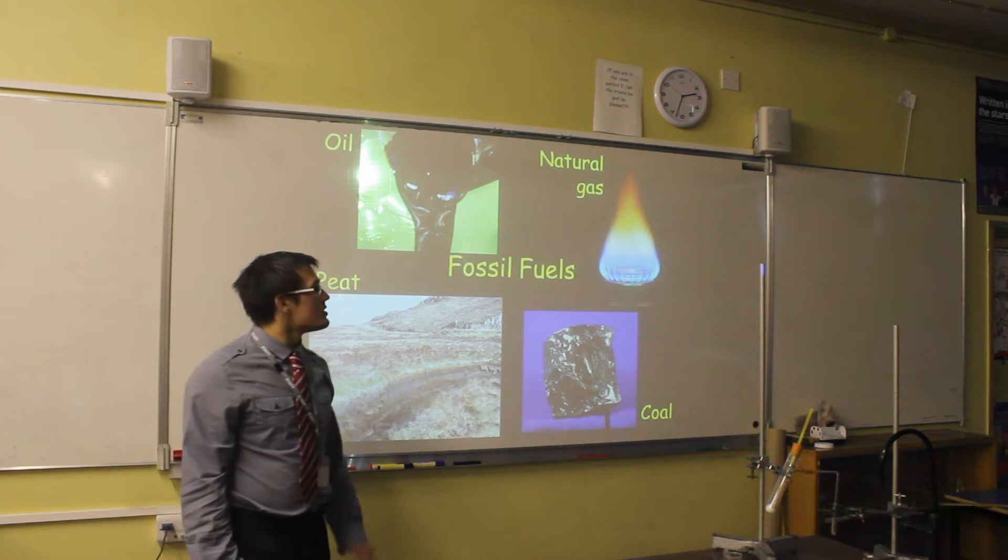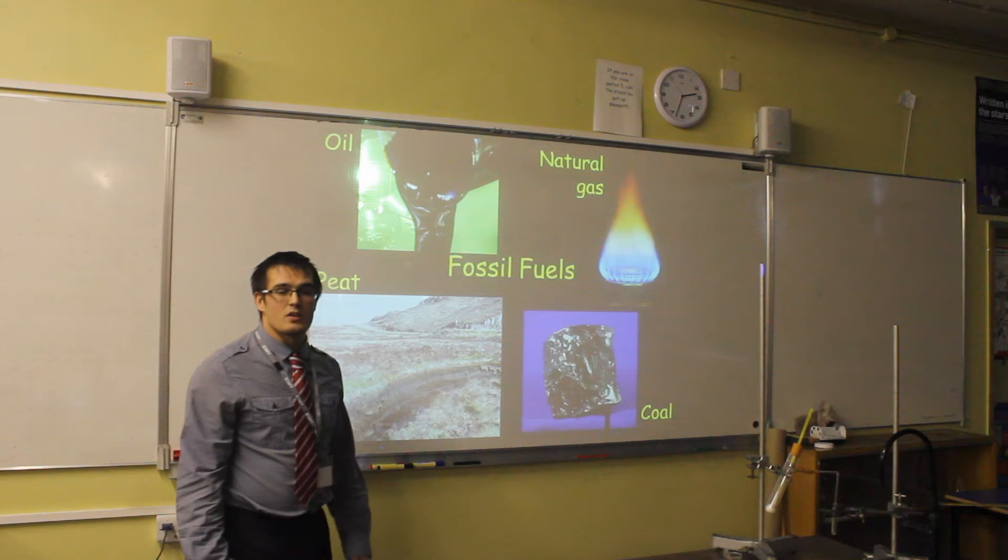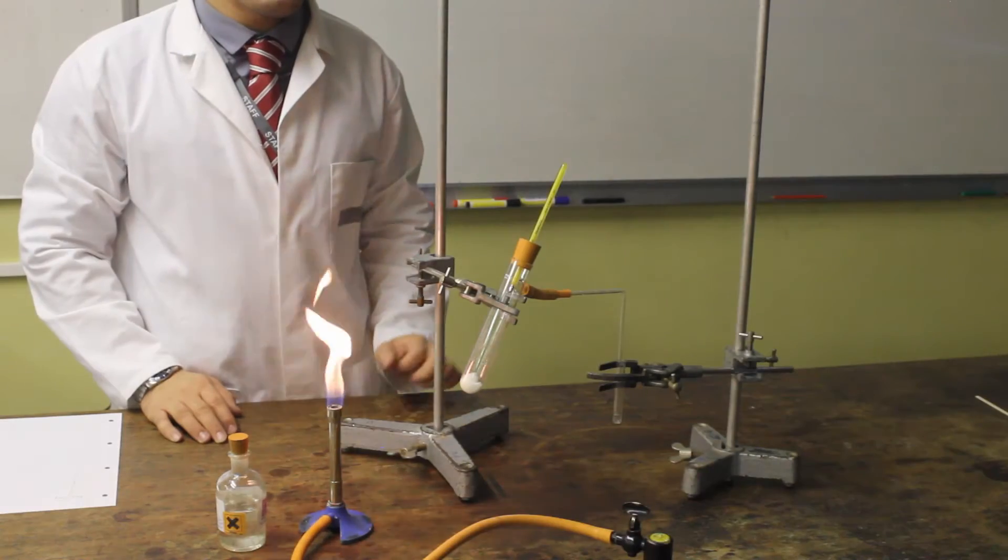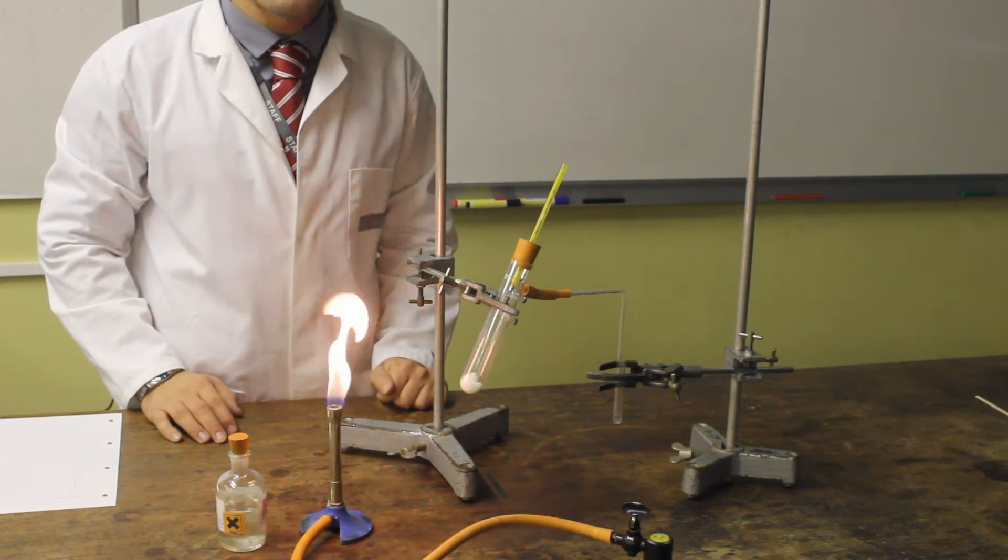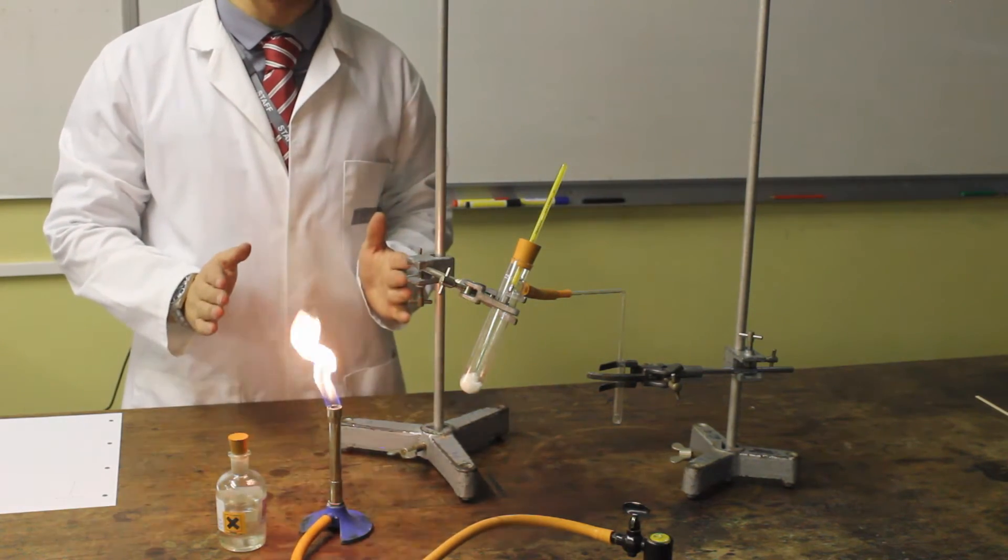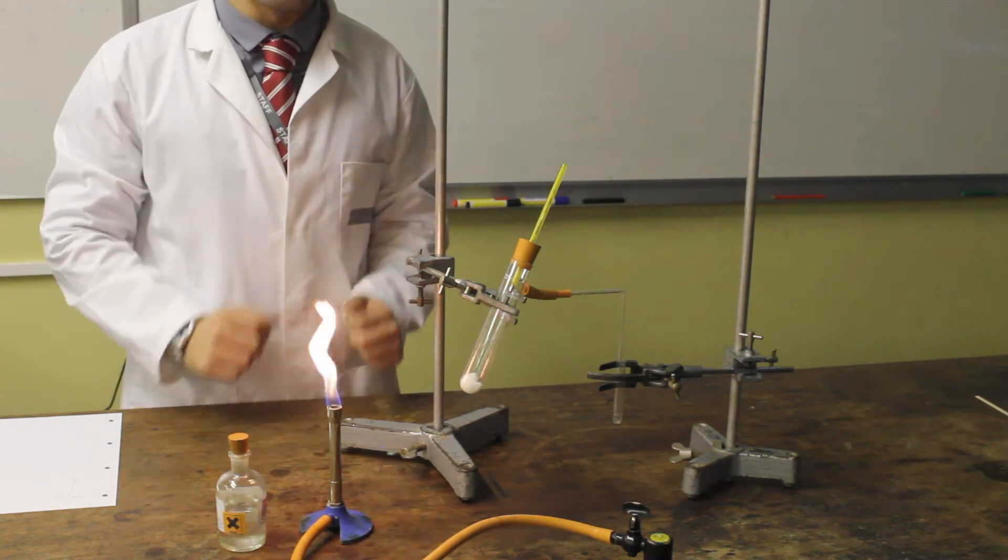It takes millions of years for each of these resources to be made, so we have to think very carefully about how we use them. A key part of your first lesson will be to learn about a fractional distillation column. This is a method of separating all of the fractions, or parts, of crude oil.